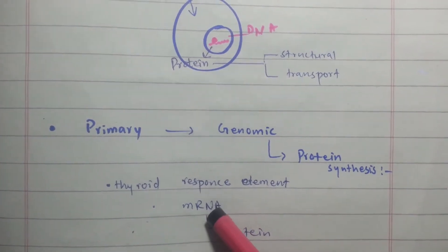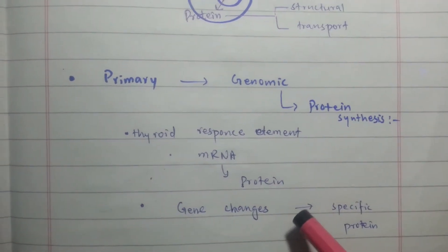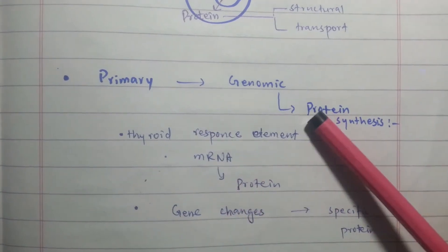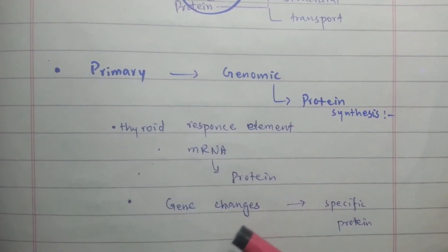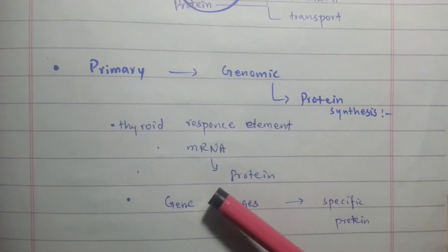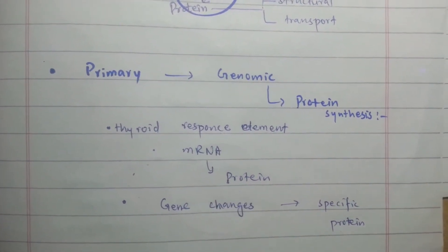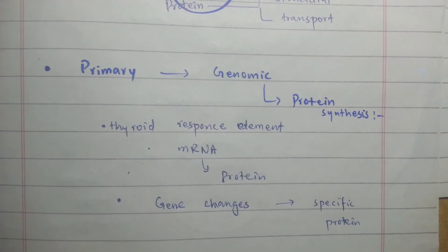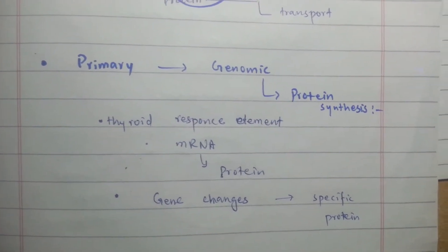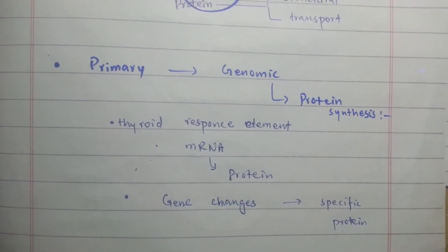The genomic effect occurs as the thyroid hormone changes gene expression — the thyroid response element produces messenger RNA from the DNA by transcription, and then the messenger RNA produces specific proteins depending on the genes. Besides this genomic effect, thyroid hormones affect almost every other cell and organ and every function of the body.